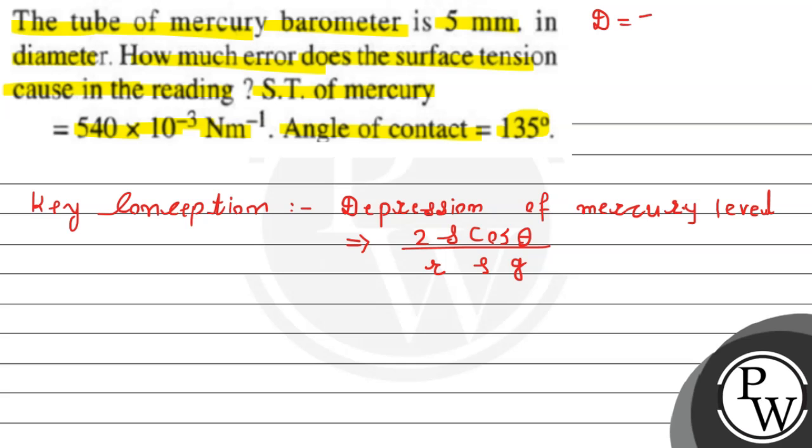Diameter is 5 mm, so radius r = 5/2 = 2.5 mm = 2.5 × 10⁻³ m. The density ρ is 13.6 × 10³ kg/m³. Angle of contact θ = 135°, and surface tension S = 540 × 10⁻³ N/m.